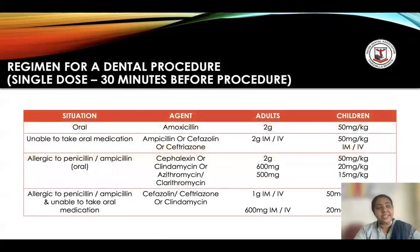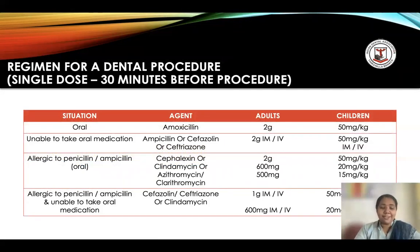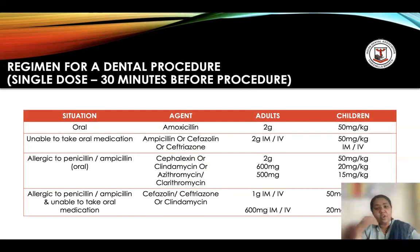For antibiotic prophylaxis, the preferred route is oral, given 30 minutes before the procedure. There is no other dose recommended — only one single dose 30 minutes prior to the procedure. Amoxicillin is 50 milligrams per kilogram body weight for children, to a maximum of two grams. If the child cannot take amoxicillin due to allergies, alternatives include cephalexin, clindamycin, or azithromycin. Dosages for these alternatives are available.